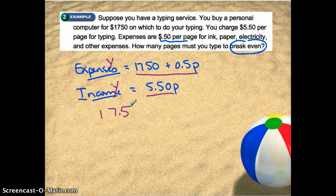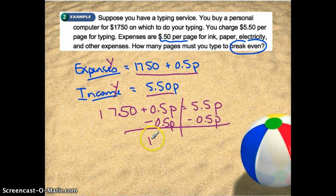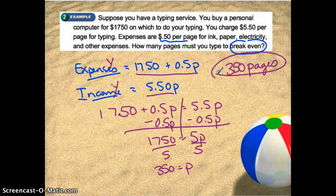To break even, I want my expenses and my income to equal the exact same thing. So if they're equal, I can set the expressions equal to each other: 1750 + 0.5P equals 5.5P. Subtracting 0.5P from both sides gives 1750 equals 5P. Dividing both sides by 5 gives P equals 350. So they're going to need to type 350 pages to break even. We'll call this a break-even problem — one of the three main types of problems in this unit.